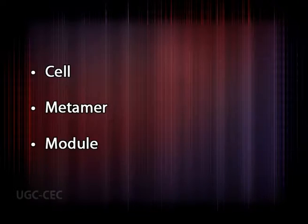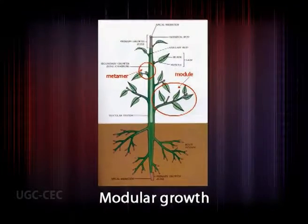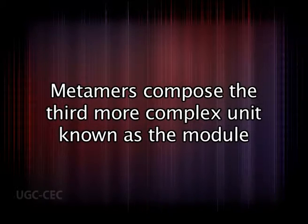In some vascular plants including shrubs and most trees, apart from apical meristems, intercalary, lateral, and diffuse meristems allow plants to grow in both height and circumference. Apical meristems are sites of morphogenetic processes during post-embryonic development. Repetitive activity of apical meristems results in the formation of three structural units fundamental to plant form: the cell, the metamer, and the module. The cell is the source of other cells; the metamer is constructed from cells; and metamers compose the more complex unit known as the module.